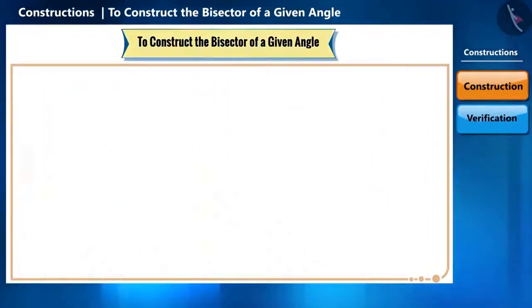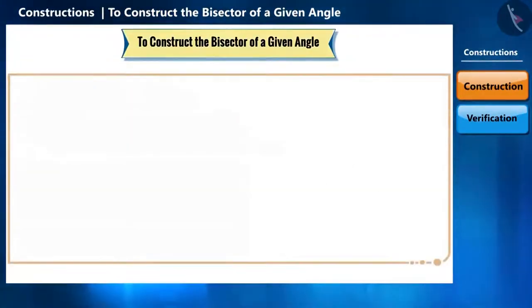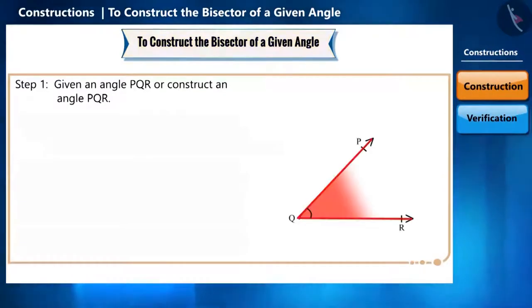Let us now learn to construct an angle bisector. Suppose we are given an angle, angle PQR, which you can see on the screen. Let's construct a bisector of this angle PQR. For this, we will have to follow some steps.